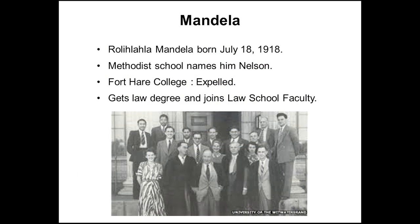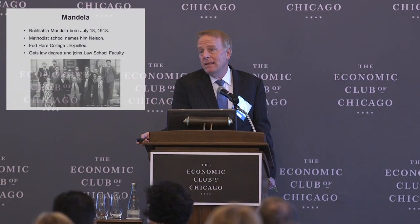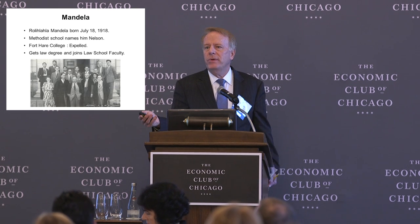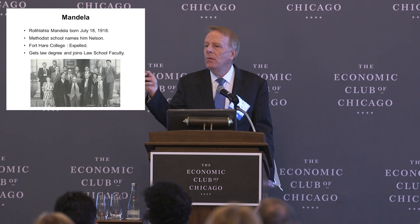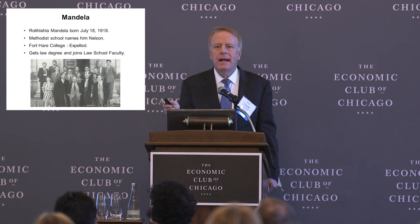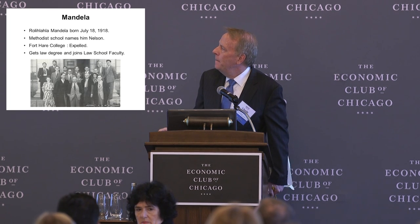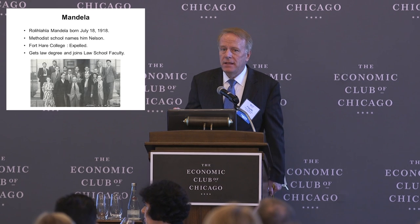Now we get to Nelson Mandela. He was not born Nelson Mandela — he was born Rohihlahla Mandela, which means troublemaker, and he was born in 1918. He was the son of a tribal chieftain. The Thembu tribe had a lot of chieftains; his father had four wives, each of whom had three huts — one for cooking, one for sleeping, one for eating. Thatch huts. So we're not talking about palatial estates, even as the son of a chieftain, but that did end up being important in his life.